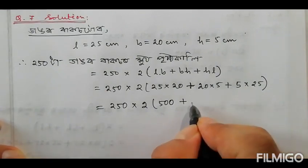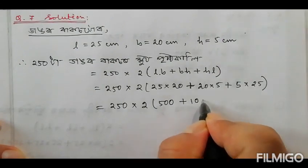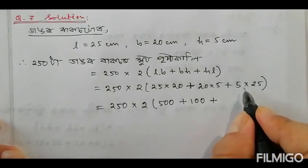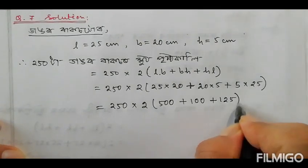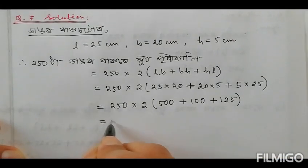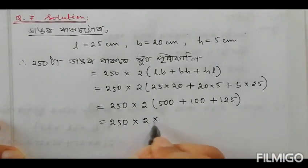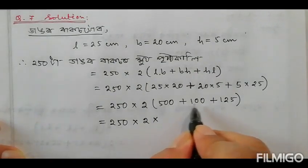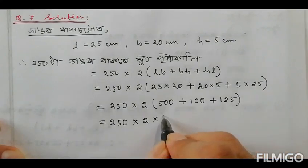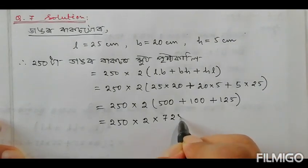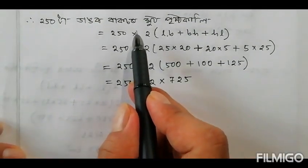And L, and L. So 5 × 25 = 125. I am going to show you how to do this: 250 × 2 = 500, and then 600, giving 725.